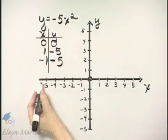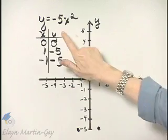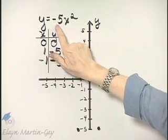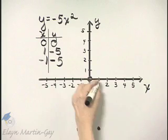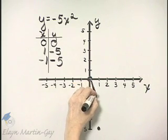So let's plot these points then, 1, negative 5, negative 1, negative 5. We also know by the way, the coefficient of x squared which we call a is negative so this parabola does open downward. And here is a sketch of it.